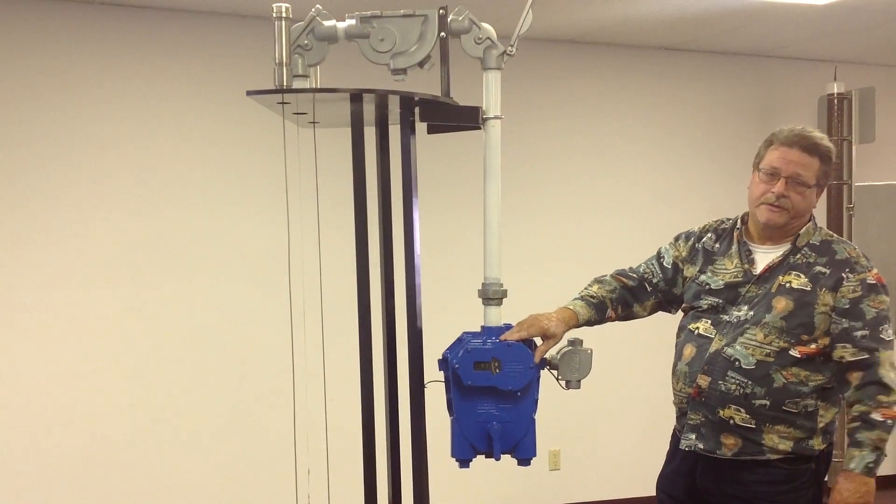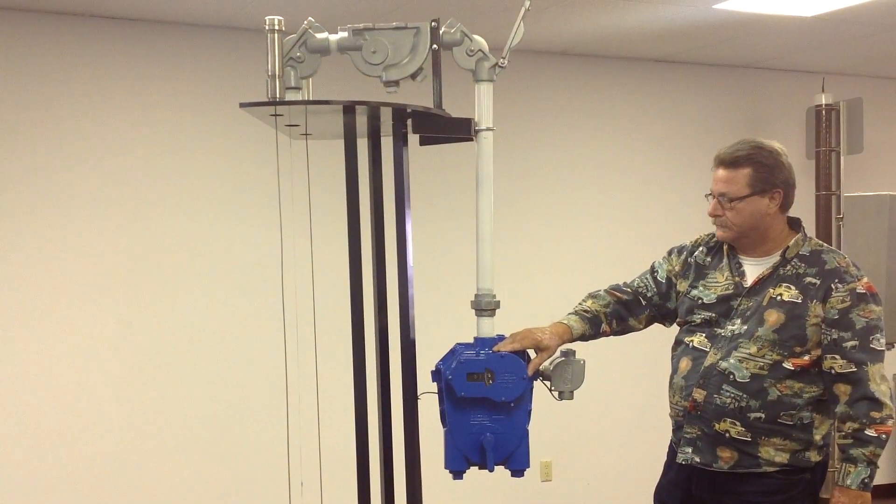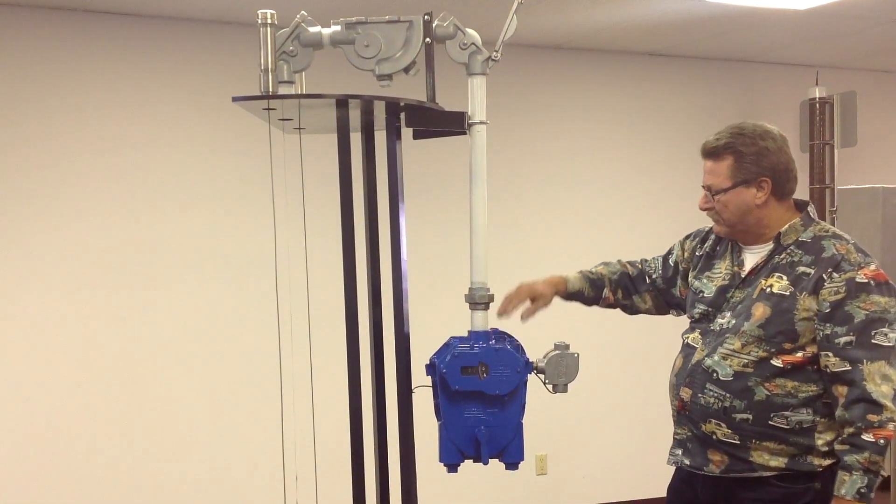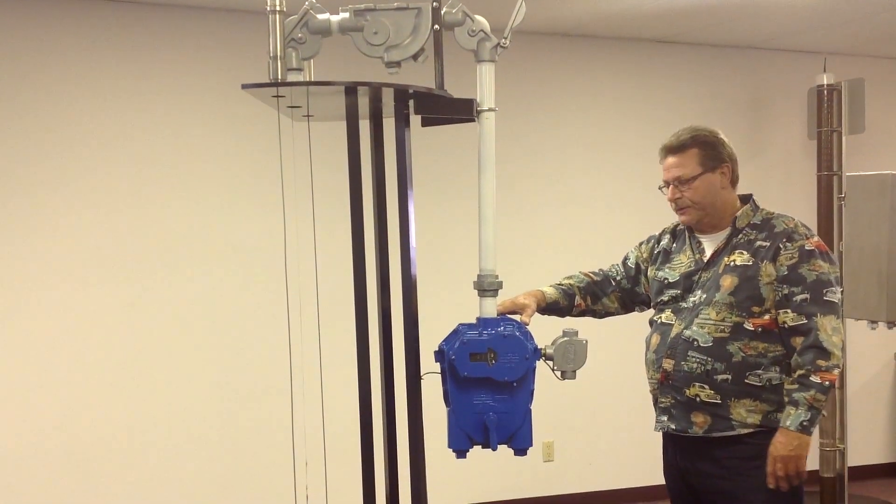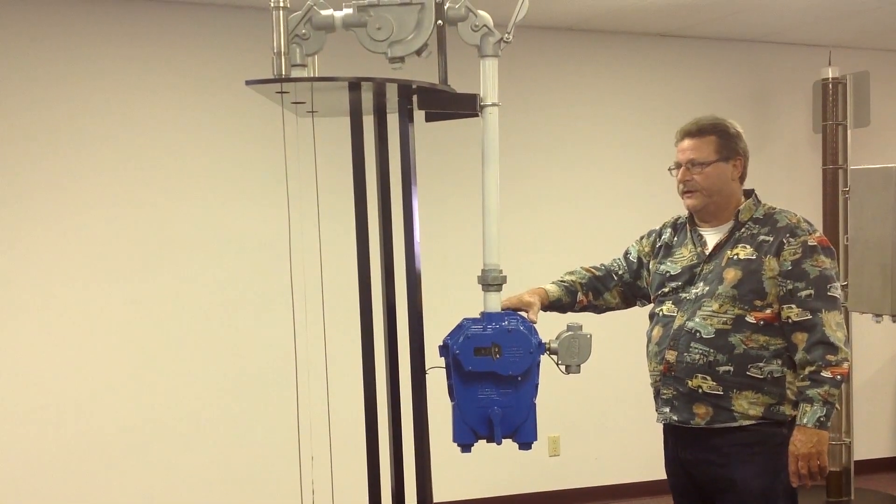This unit is also known as the mechanical tape and float gauge. You have a mechanical readout on the front. Electronics can be purchased separately to add to the back to send information to your PLC or to your computer.